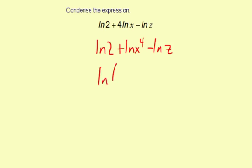So it's going to be the natural log of 2x to the 4th, those are both positive, and then the z is negative, so it goes in the denominator.